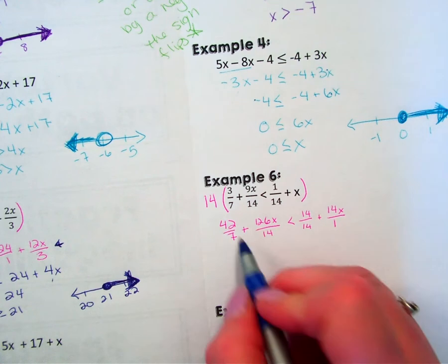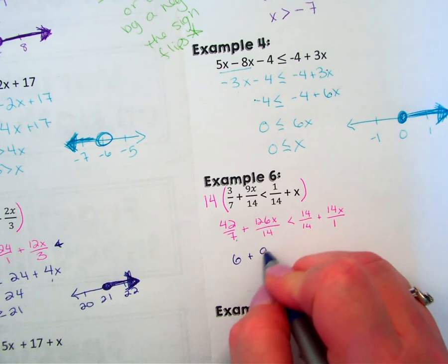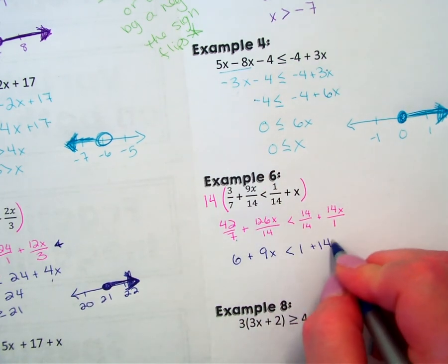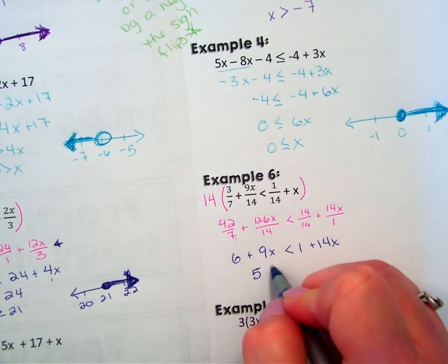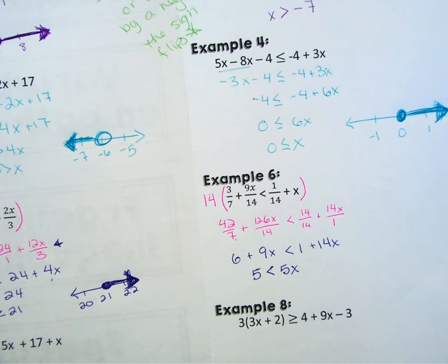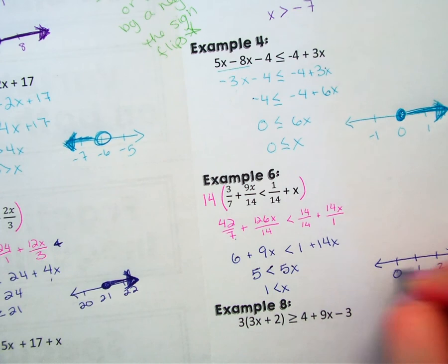So again, cleaning it up, 42 over 6 is 6. 162 over 14 is a 9. 14 over 14 is 1, and that's going to become a 14x. So I'm going to try to do two things in one step here. I'm going to subtract my 1 and I'm going to subtract my 9x. 6 minus 1 gives me 5. 14x minus 9x gives me 5x. Divide by 5, and x is greater than 1. Open circle, shade to the right.